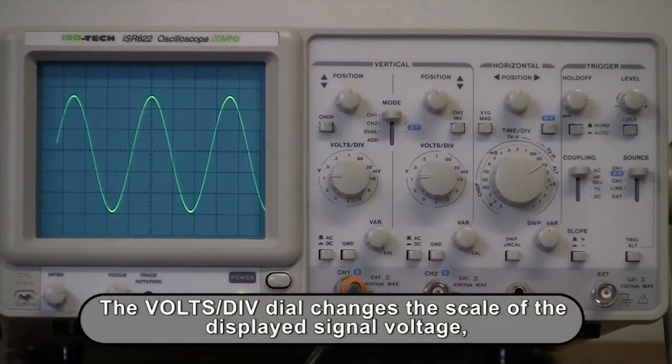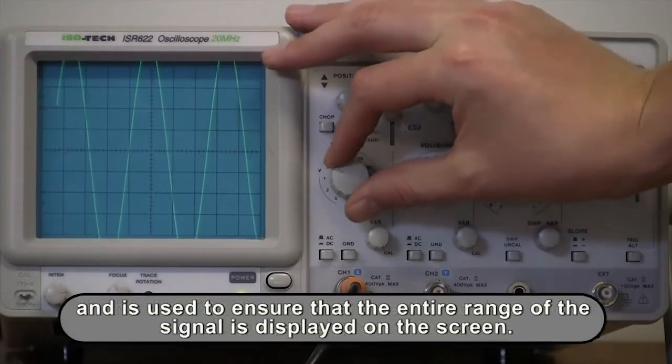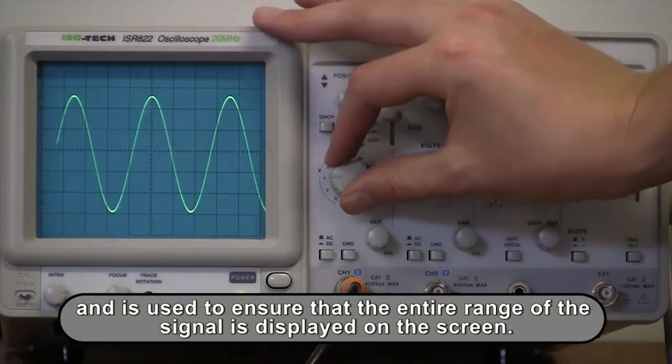The volts per division dial changes the scale of the displayed signal voltage and can be used to ensure that the entire range of the signal is displayed on the screen.